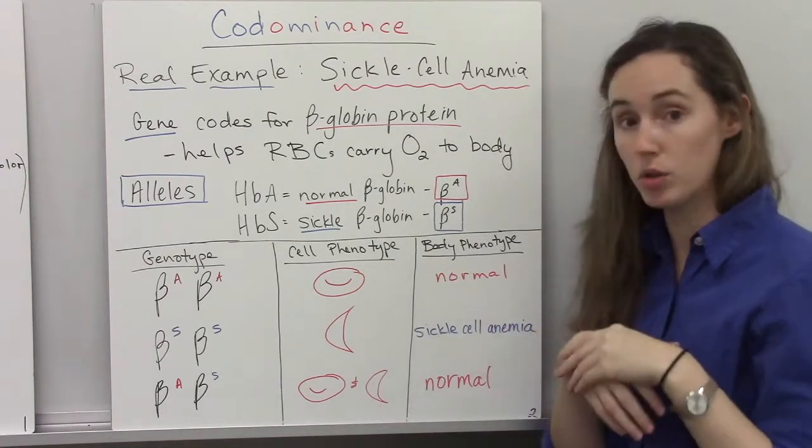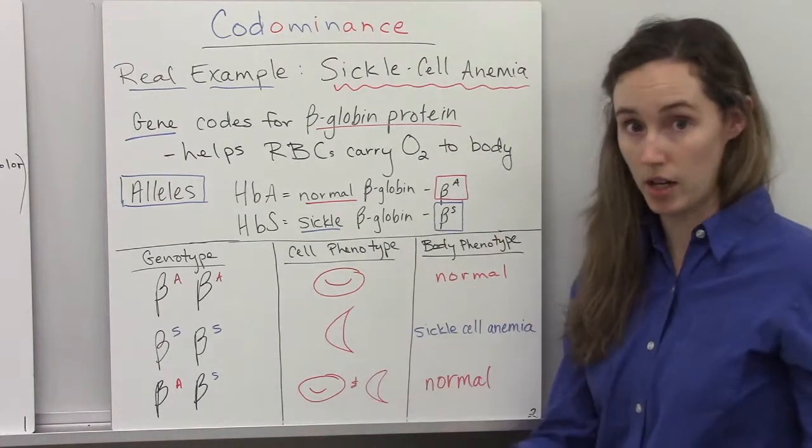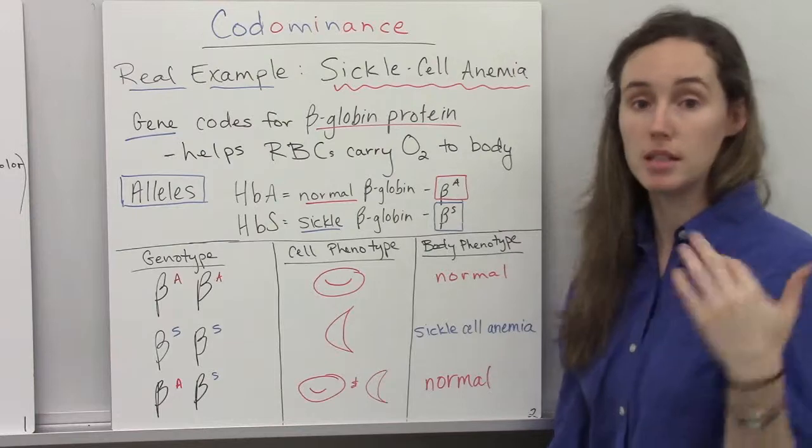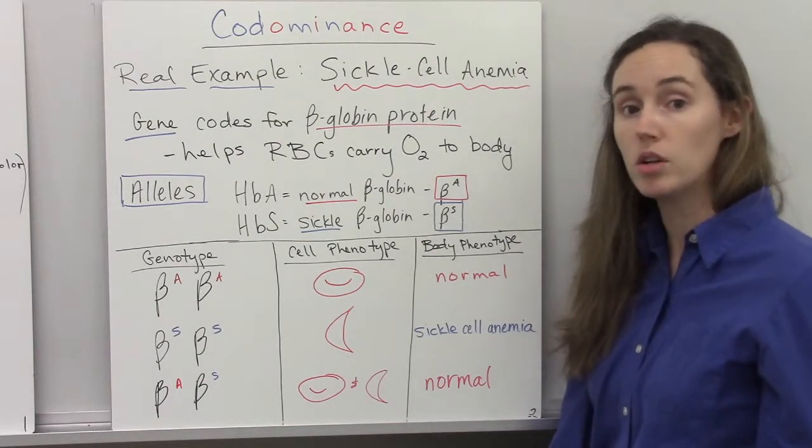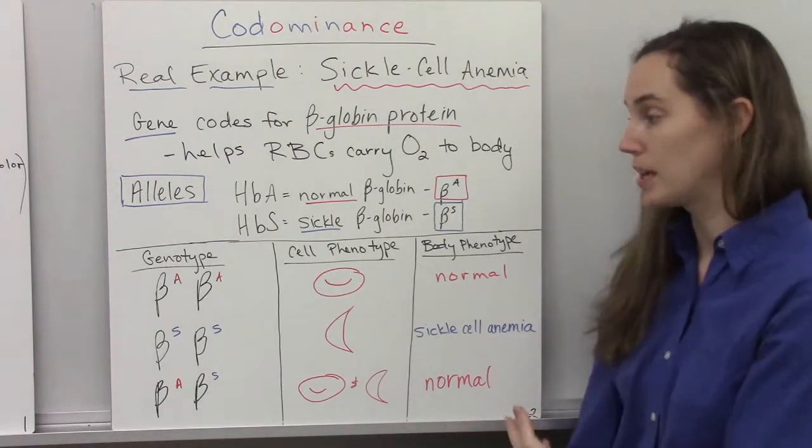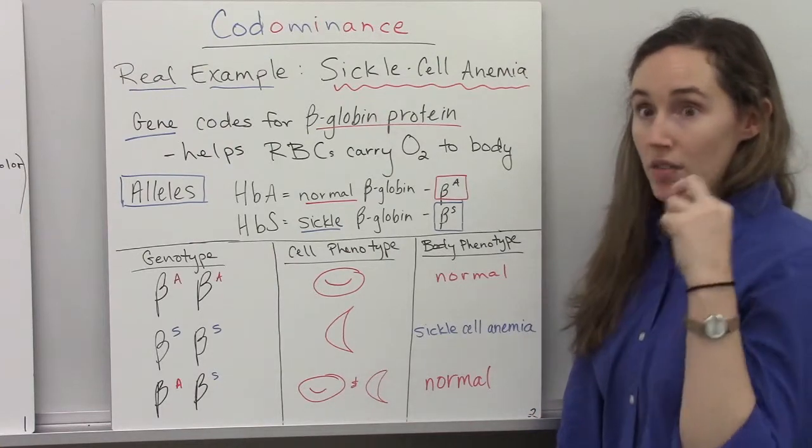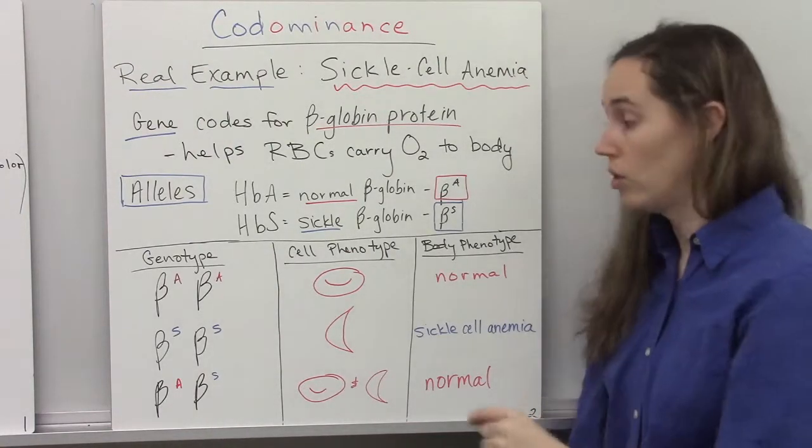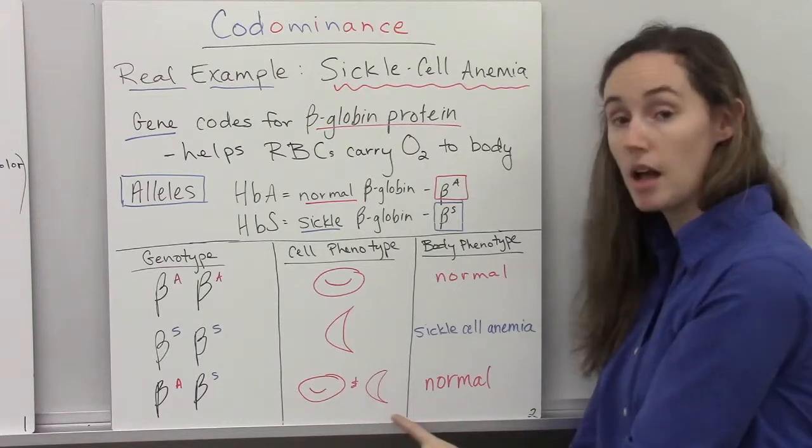But if you are just looking at that person walking around, they don't exhibit the symptoms of sickle cell and so you see them as normal. So on the cellular level, there's co-dominance happening.